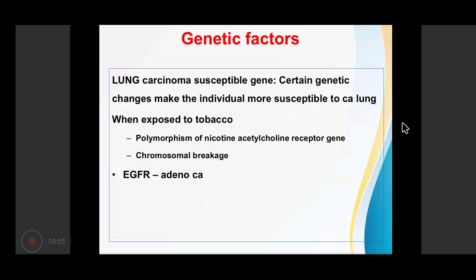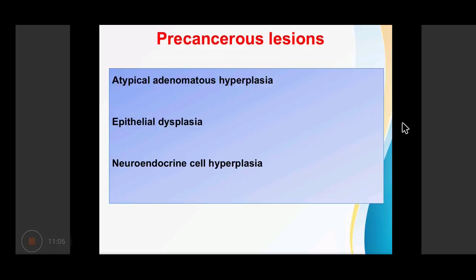Apart from genetic mutations, there can be precancerous lesions. Certain pathological lesions carry a higher risk of lung cancer formation, including atypical adenomatous hyperplasia, epithelial dysplasia, and neuroendocrine cell hyperplasia. Scar formation can also give rise to lung cancers; scars from old infarcts, foreign bodies, and tuberculosis can give rise to adenocarcinoma. These are termed scar carcinomas. In summary, the etiopathogenesis involves tobacco smoking, occupational and industrial hazards, air pollution, genetic factors, and scarring.